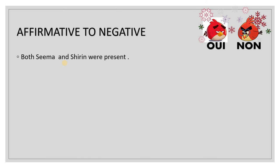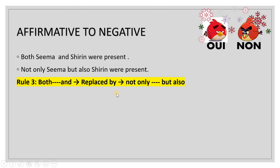'Both Seema and Shirin were present' is affirmative. It transforms to 'Not only Seema but also Shirin were present.' The word 'both' is replaced by 'not only...but also.' This is a fixed, permanent rule: whenever we transform from affirmative to negative and the word 'both' is used, we replace it with 'not only...but also.'